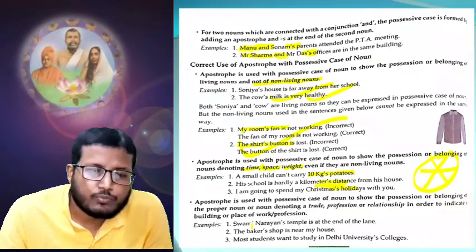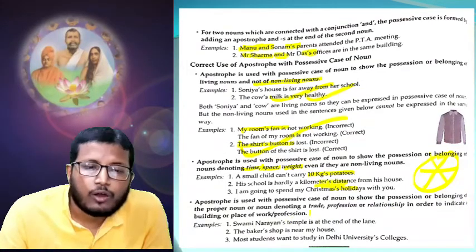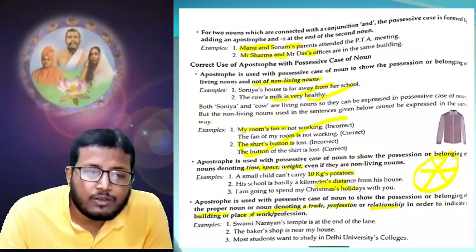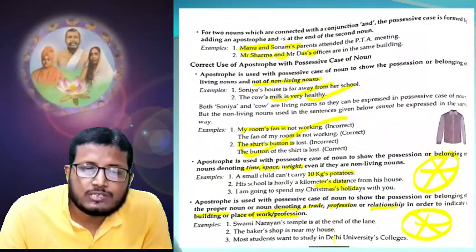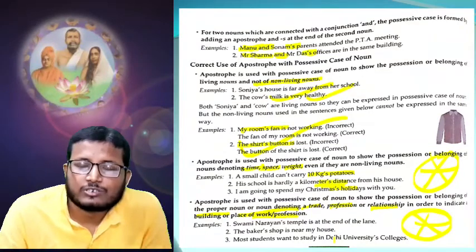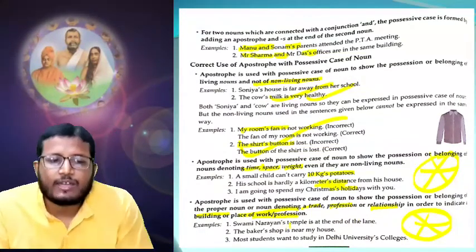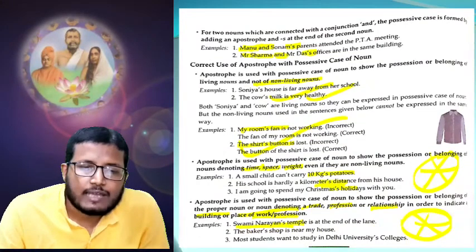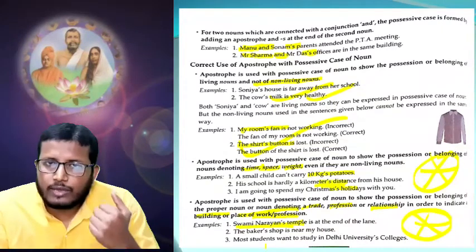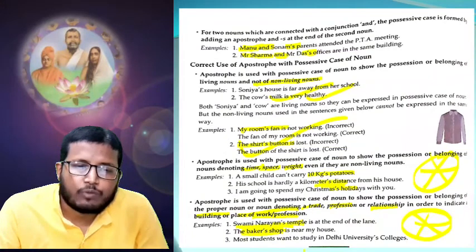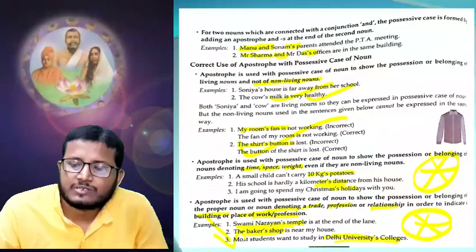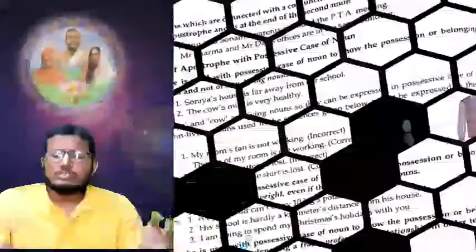Another example is time: 'I am going to spend my Christmas holiday's' — that's about time. In these three cases — time, space, weight — we can use apostrophe even for non-living things. Then: apostrophe is used with possessive case of noun to show possession or belonging of proper nouns, or nouns denoting a trade, profession, or relations, in order to indicate a building or place of work.